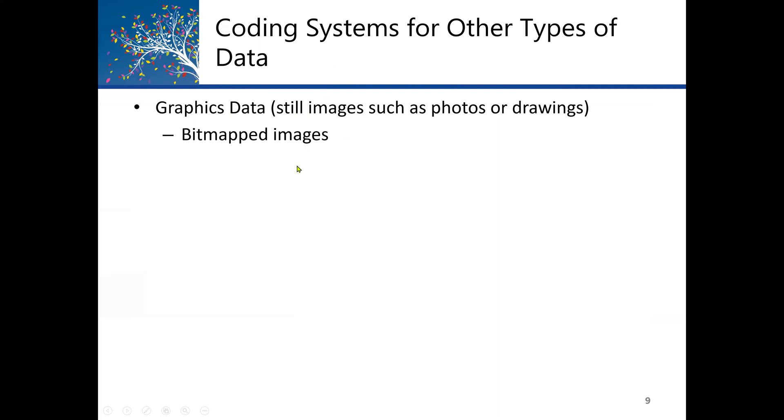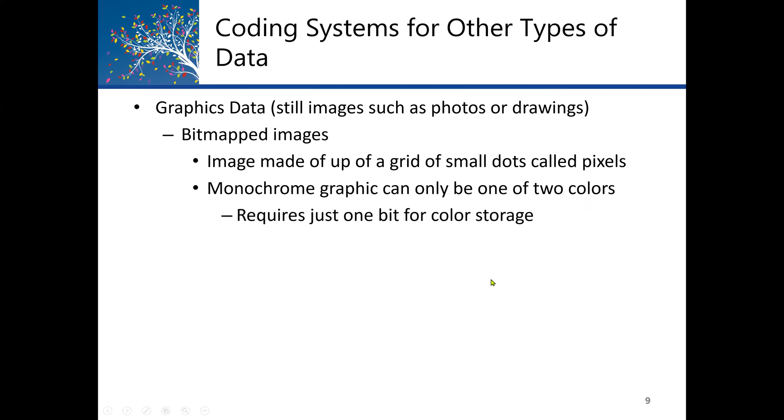The coding system for other types of data starts with graphic data. Graphics data is still images such as photos or drawings, also called bitmap images. The image is made of a grid of small dots called pixels. The pixels are more or less dots. We also have what we call monochrome graphics. A monochrome graphic can only have one of two colors, either black or white. This requires just one bit for color storage.